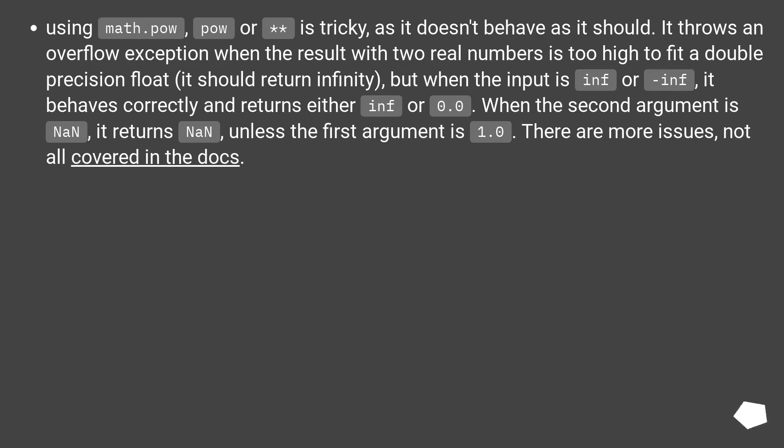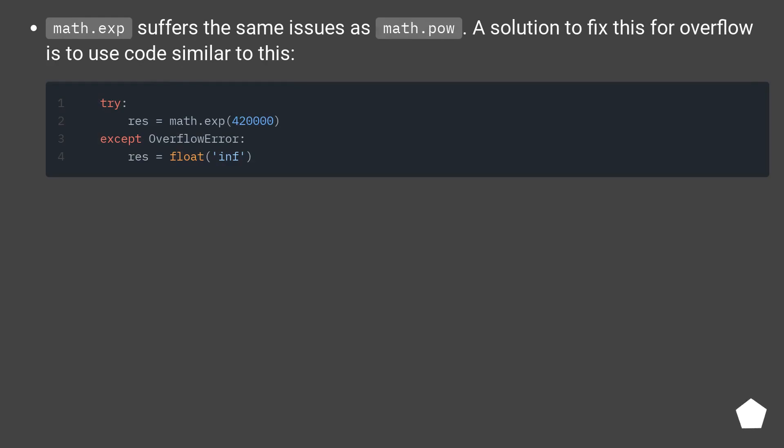When the second argument is NaN, it returns NaN, unless the first argument is 1.0. There are more issues, not all covered in the docs. Math.exp suffers the same issues as math.pow. A solution to fix this for overflow is to use code similar to this.